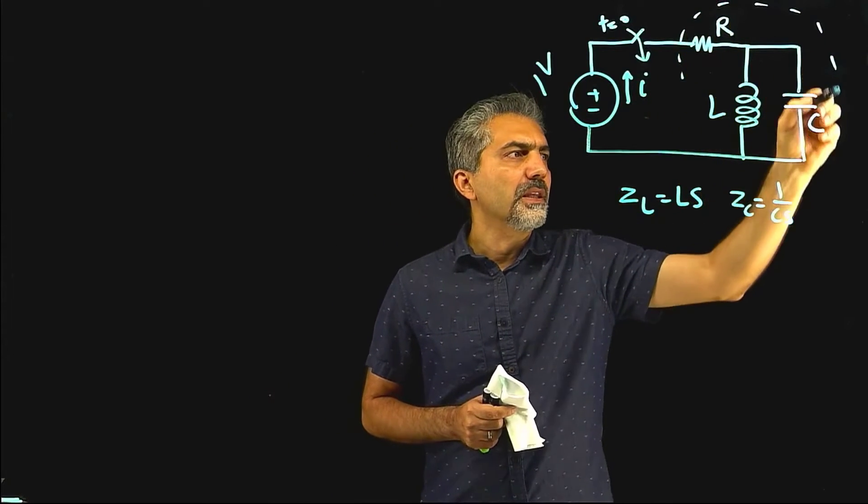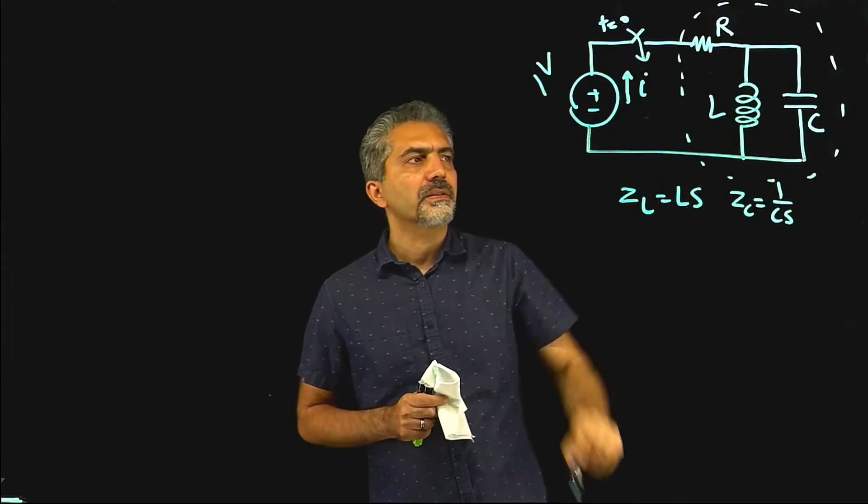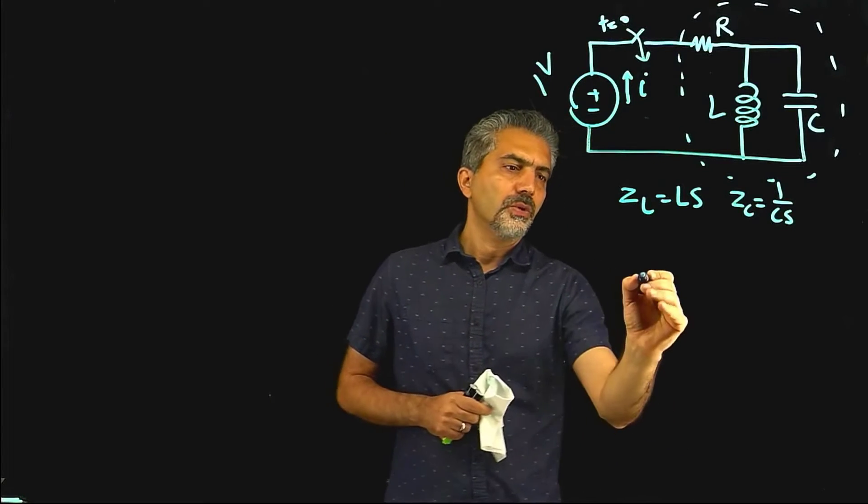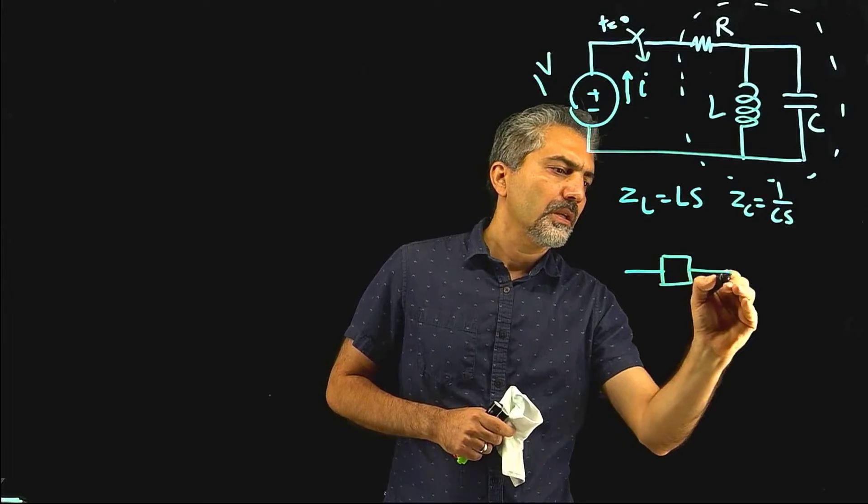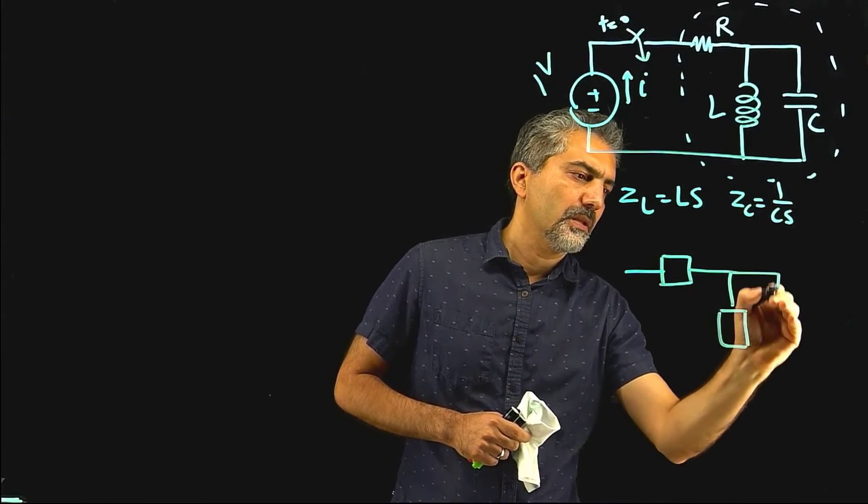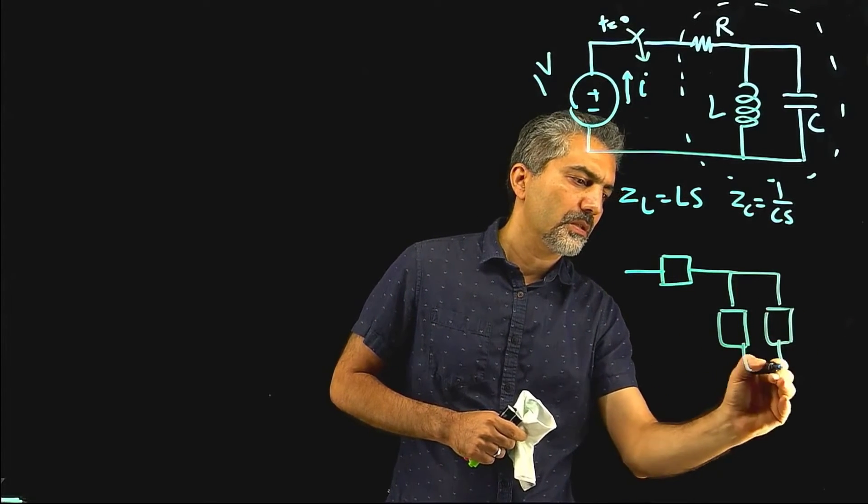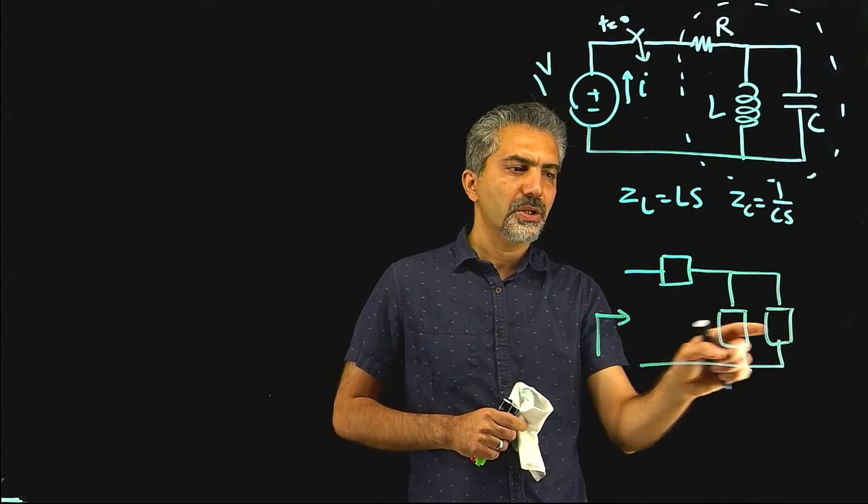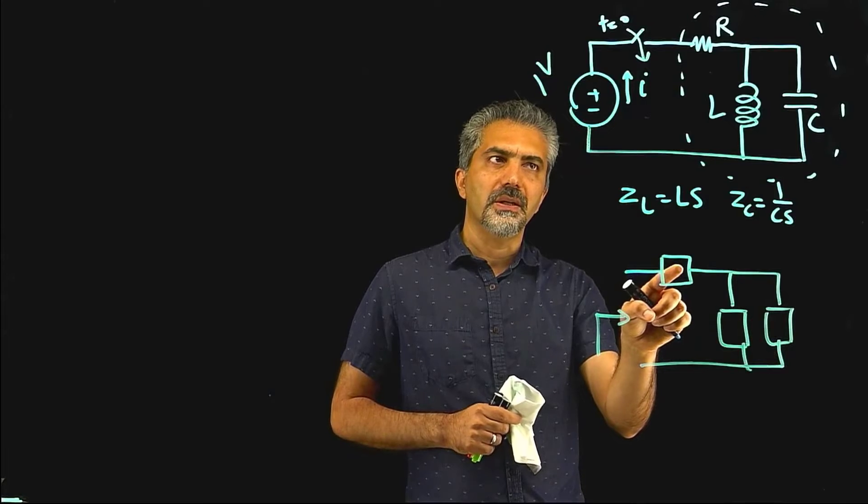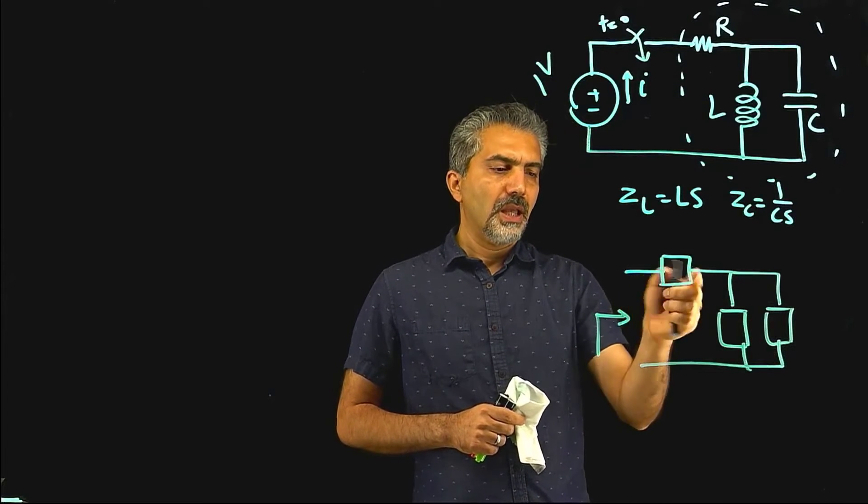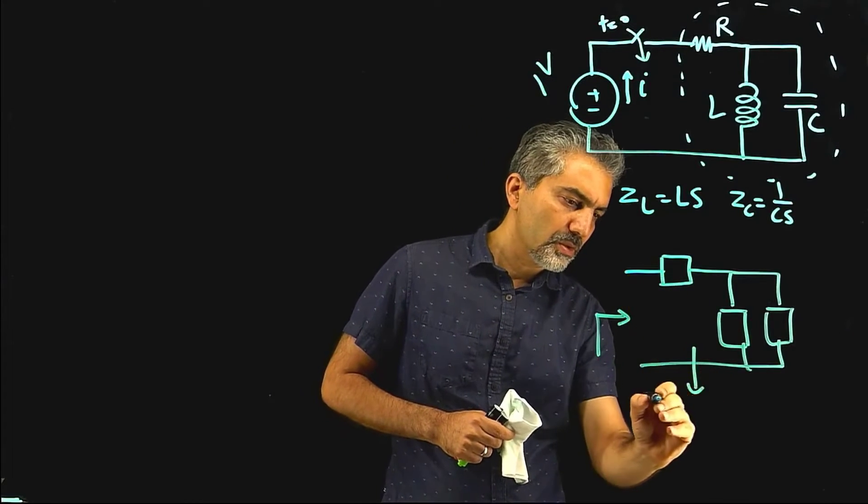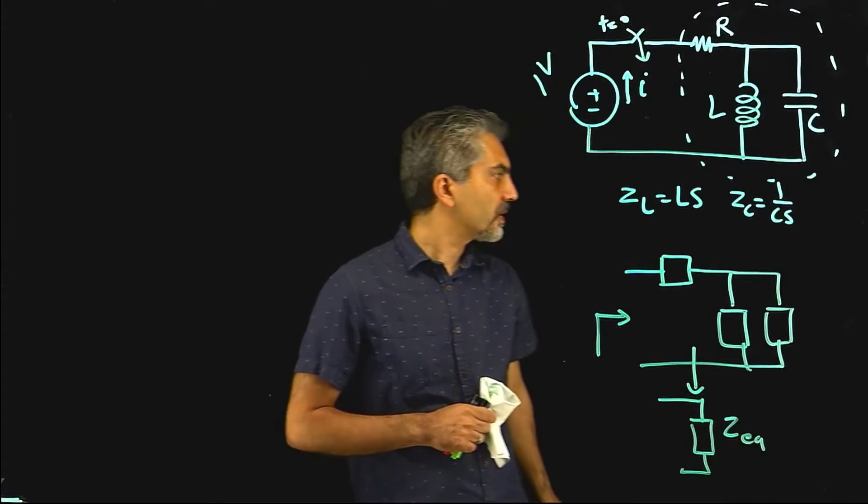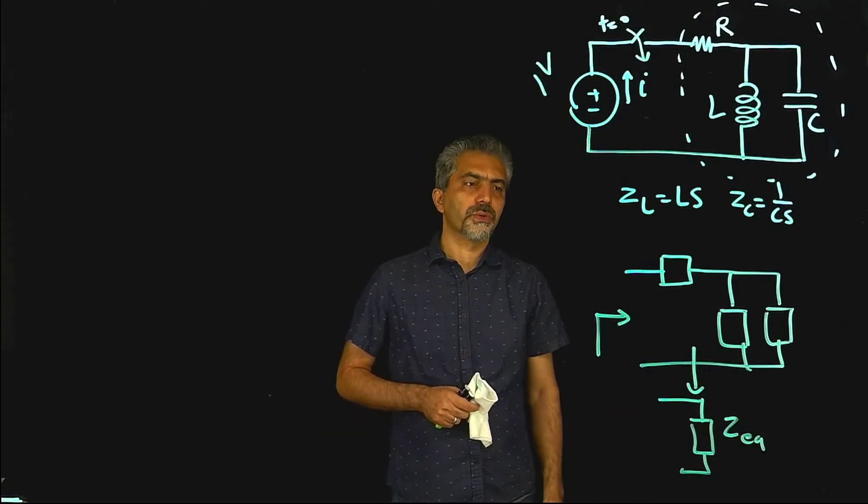And here's the shortcut. I can take this and in the domain of Laplace, I can turn it into one impedance. How do I do that? Well, this is an impedance. That's an impedance, and that's an impedance. Each is an impedance. And looking into this whole thing, these two impedances are in parallel to each other, and then the result is in series with that impedance. And then this whole thing turns into one equivalent impedance. So that's what I'm going to do.